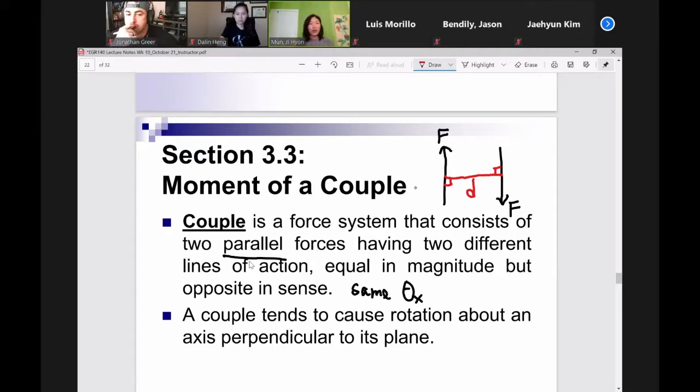So this pencil is representing our perpendicular distance one more time. Notice that the force F on the left hand side is pushing your pencil upward, right? But notice that I'm not telling you to fix your pencil at any particular point. So the force on the left hand side is pushing your pencil upward. The force on the right hand side is pushing it downward because you have opposite senses, right? So what happens to your pencil as a result of these two forces being applied to your pencil? How does your pencil rotate? Clockwise? Clockwise.